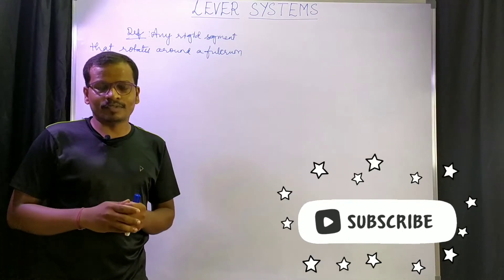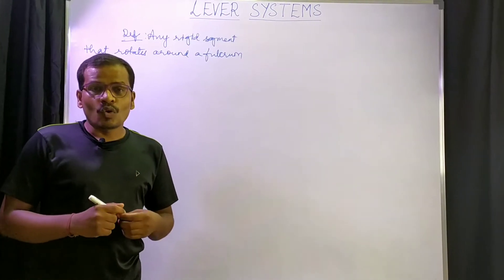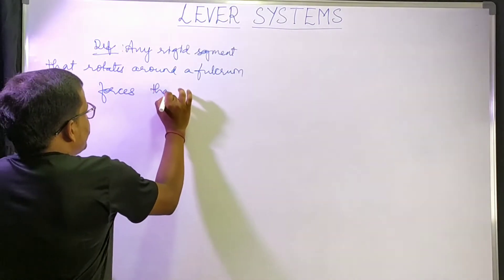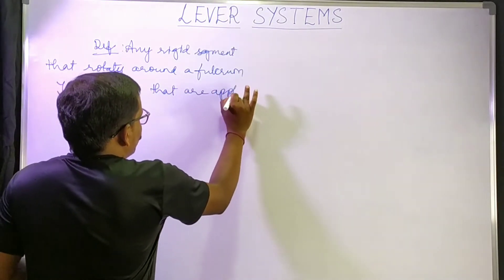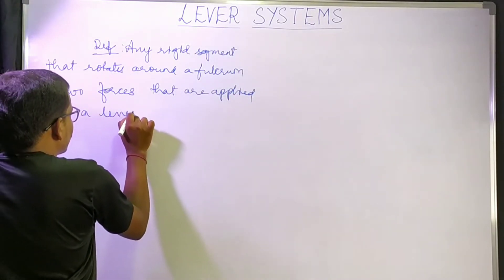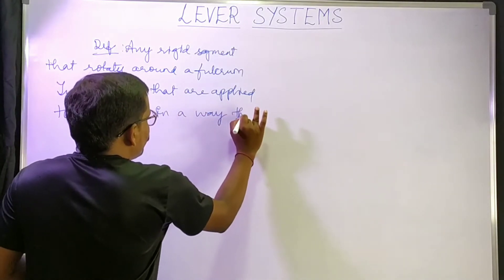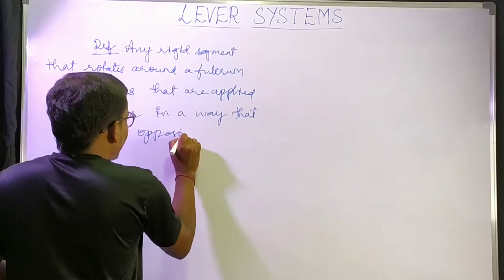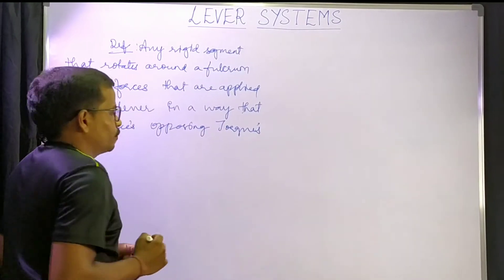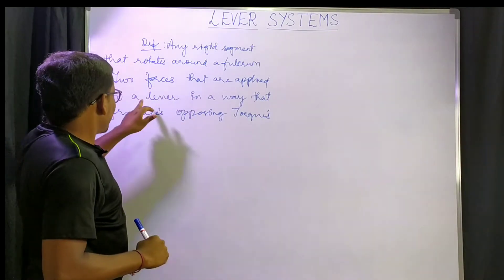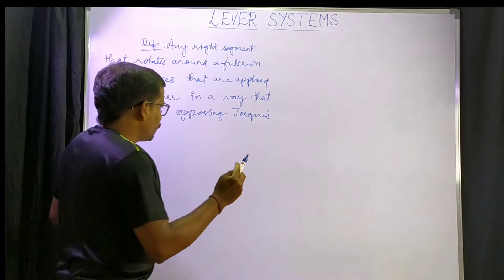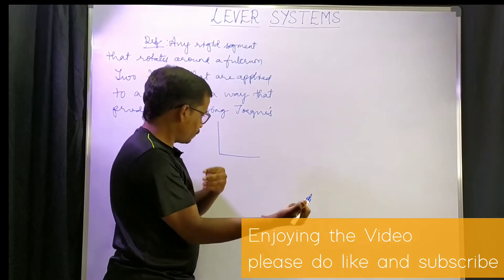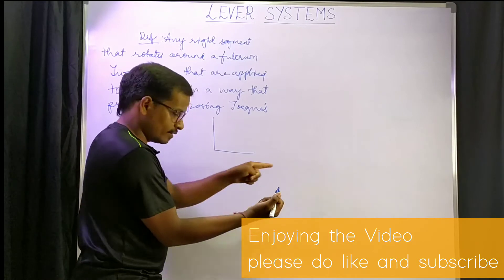Lever systems exist whenever two forces are applied to a lever in a way that produces opposing torques. For example, if you take elbow flexion — flexed to 90 degrees — with the humerus and the forearm segment, two forces are applied to this lever in a way that produces opposing torques.